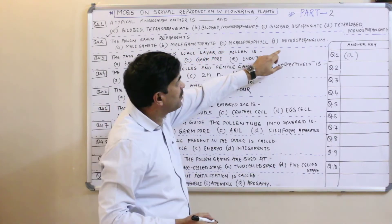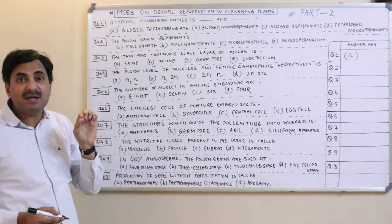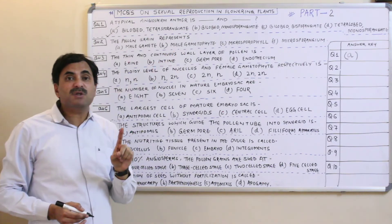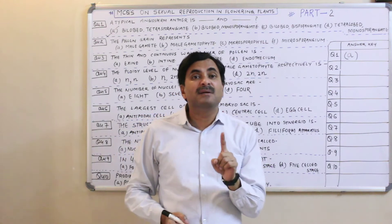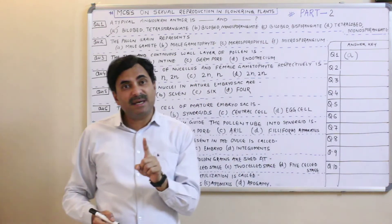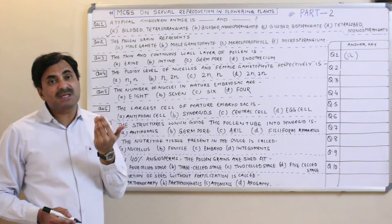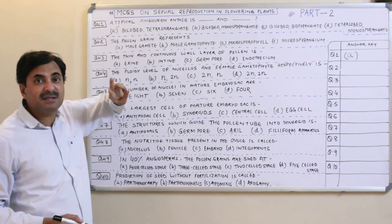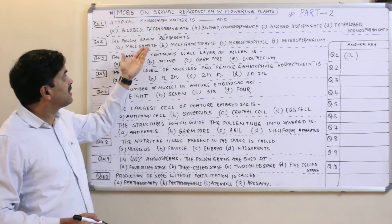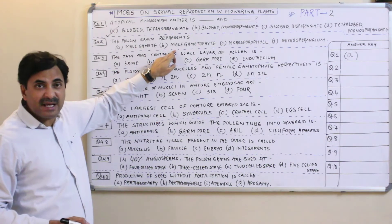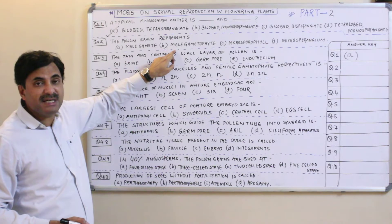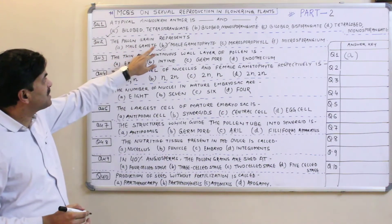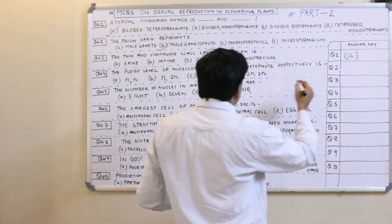Question number two: the pollen grain represents the male gametophyte. Always remember that the pollen grain represents the male gametophyte because the pollen grain bears male gametes. The structure which forms the gametes is called the gametophyte, so the pollen grain represents the male gametophyte. Question number two has the answer B.